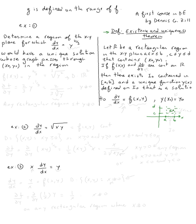If f(x, y) — looking at this differential equation — and its partial derivatives are continuous on R, then there exists an interval I₀ containing x₀, such that there's going to be a unique function y(x) satisfying the initial condition y(x₀) = y₀. That unique function is a solution to the initial value problem.